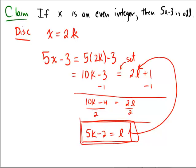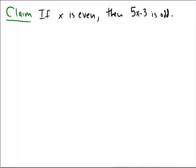Pause the video and see if you can prove this on your own with what we've just done here in the discussion. And assuming you gave it a good shot here, let's prove it formally. If x is even, then 5x minus 3 is odd.